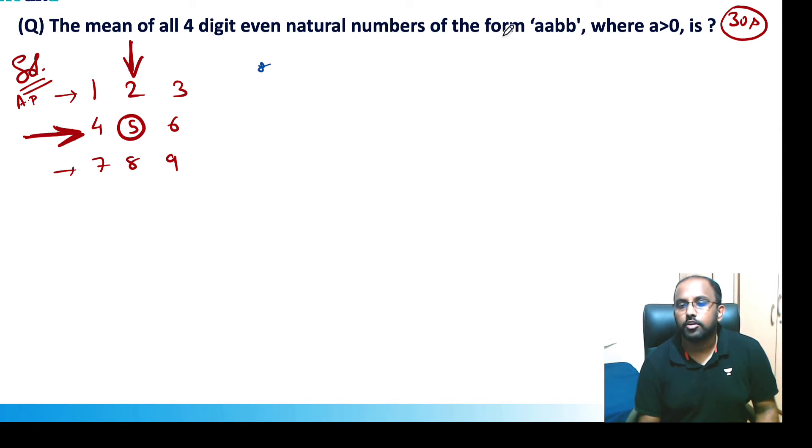Now let's see how to solve this question. This is aabb. What are the numbers? These are all even natural numbers. My numbers will be 1100, 1122, 1144, 1166, and 1188.